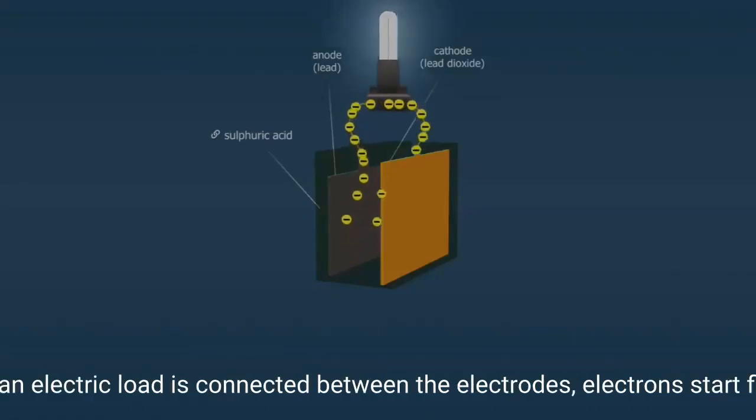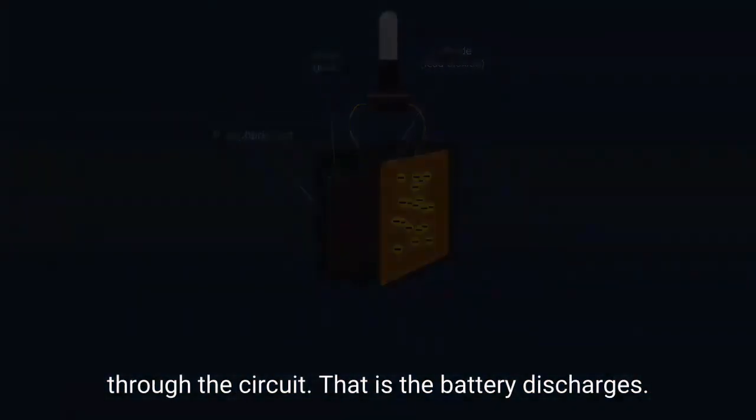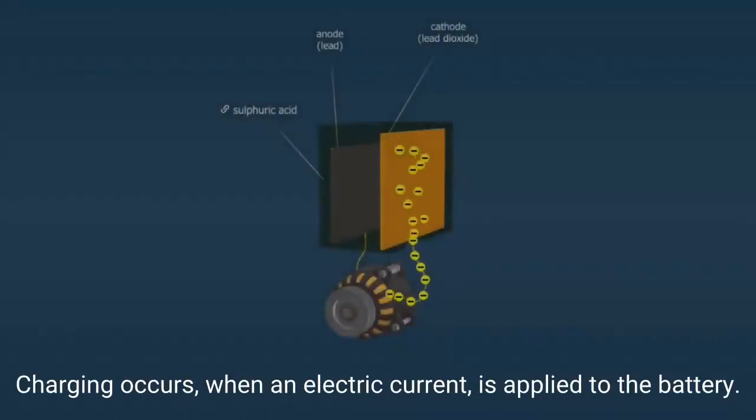When an electric load is connected between the electrodes, electrons start flowing through the circuit. That is, the battery discharges. Charging occurs when an electric current is applied to the battery.